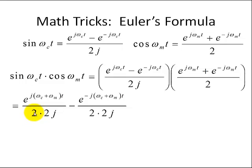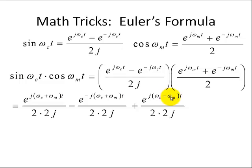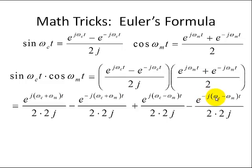The third term has e^(j*omega_c*t) from this term, and e^(-j*omega_m*t) from the cosine term. The fourth term has e^(-j*omega_c*t) and, because of minus times minus, a positive e^(j*omega_m*t). So the last term is a result of multiplying those two inner terms together.